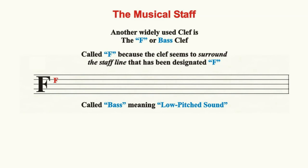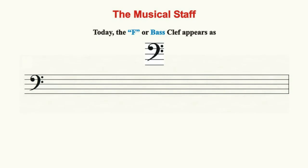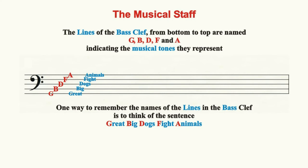Another commonly used clef is the F or bass clef. It's called the F clef because the symbol is a form of the letter F and seems to surround and indicate the staff line named F. It's called the bass clef because the range of tones indicated on this staff are lower in pitch. Like the treble clef symbol, the bass clef symbol is still the letter F but appears in a more ornate form. The lines of the staff in the bass clef, from bottom to top, are named G, B, D, F, and A, each representing the name of a specific tone.